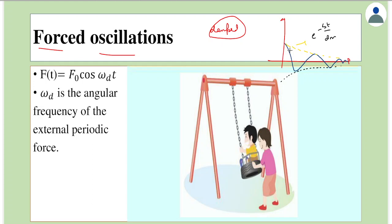All damped oscillators, like a simple pendulum in air or a spring-mass system, would stop oscillating with time. In case you want to sustain the oscillations or increase the amplitude, then we need to pump energy into the system — that is, we need to supply energy to the system. That energy can be supplied by applying an external force.